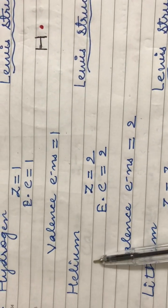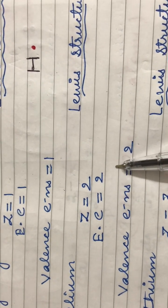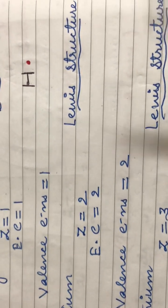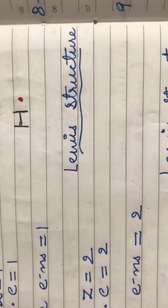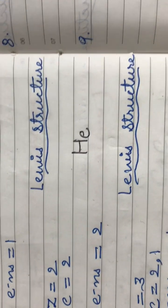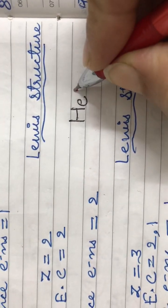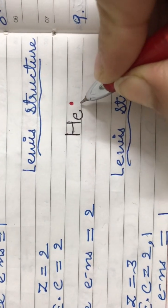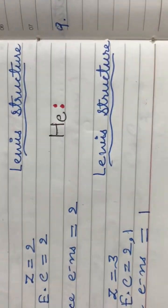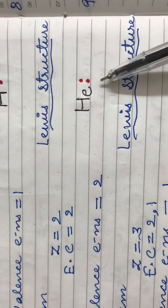Similarly, helium is the second element in the periodic table. Its electronic configuration is two, so it has two valence electrons. Its Lewis structure is written as He with two dots representing its two valence electrons. This becomes the Lewis structure for helium.